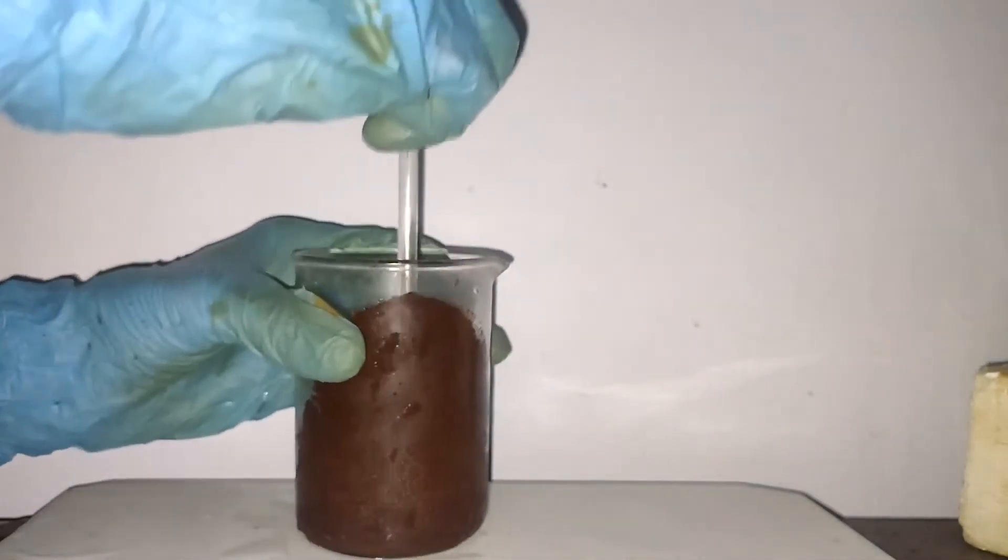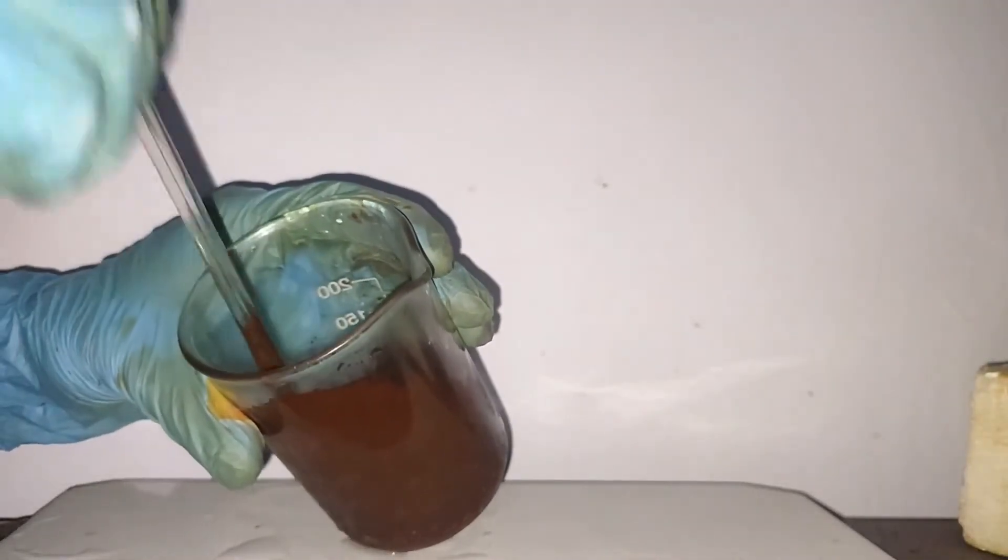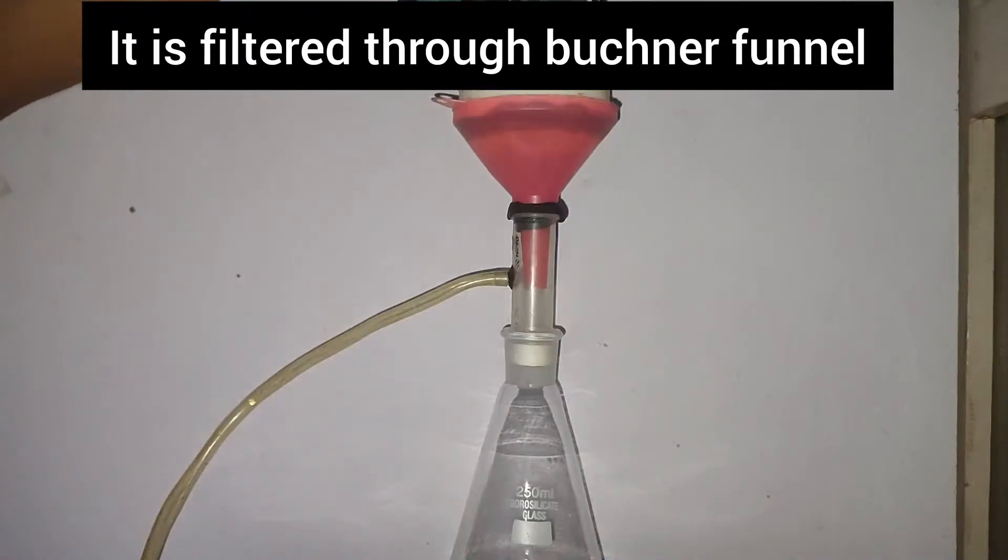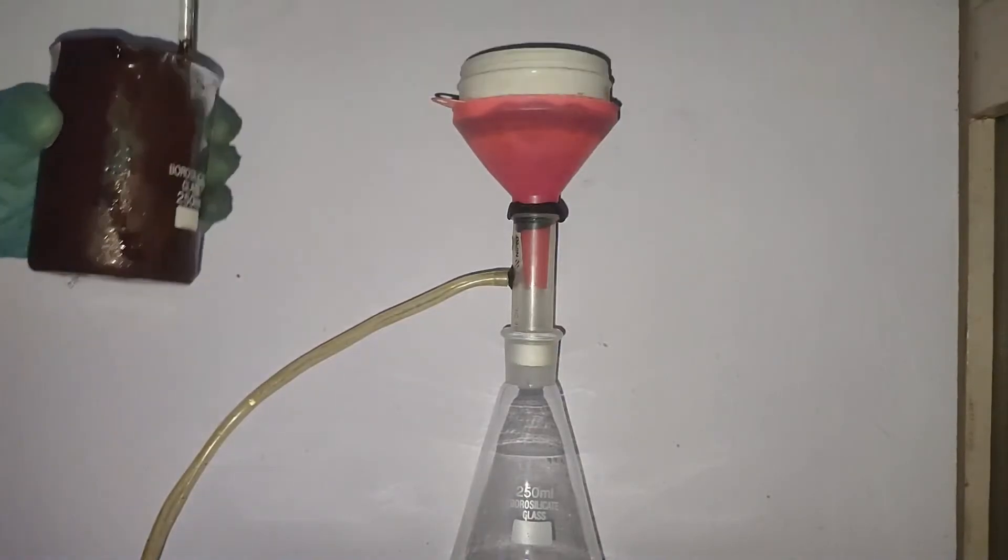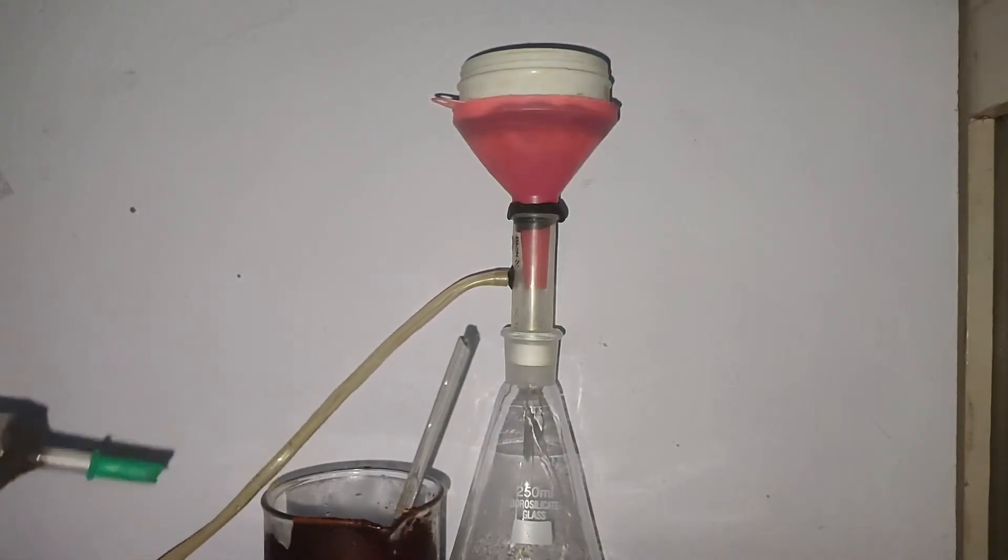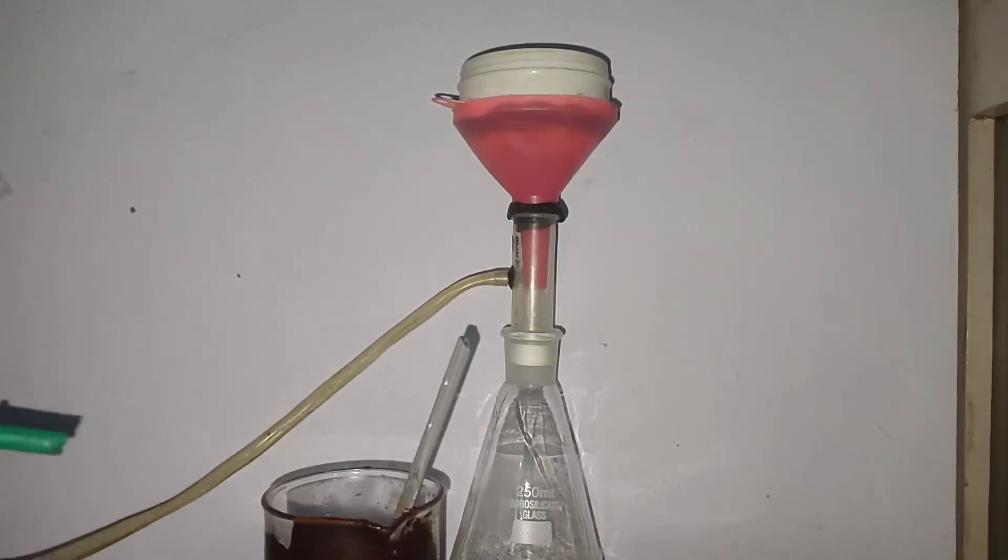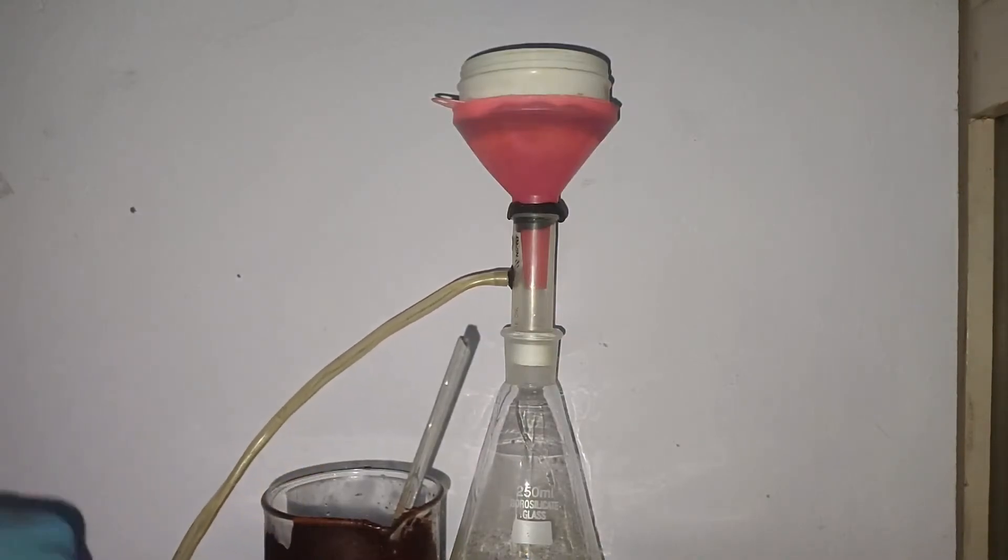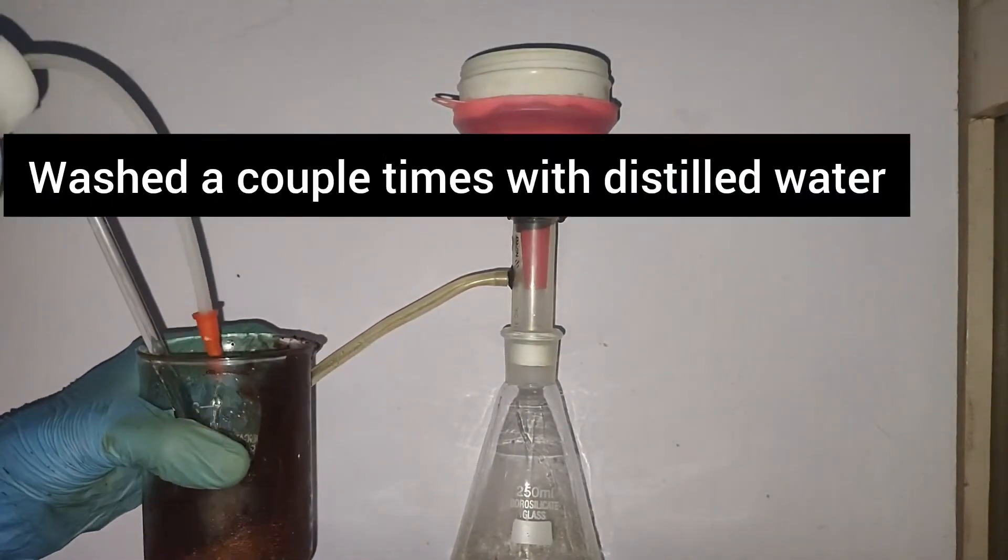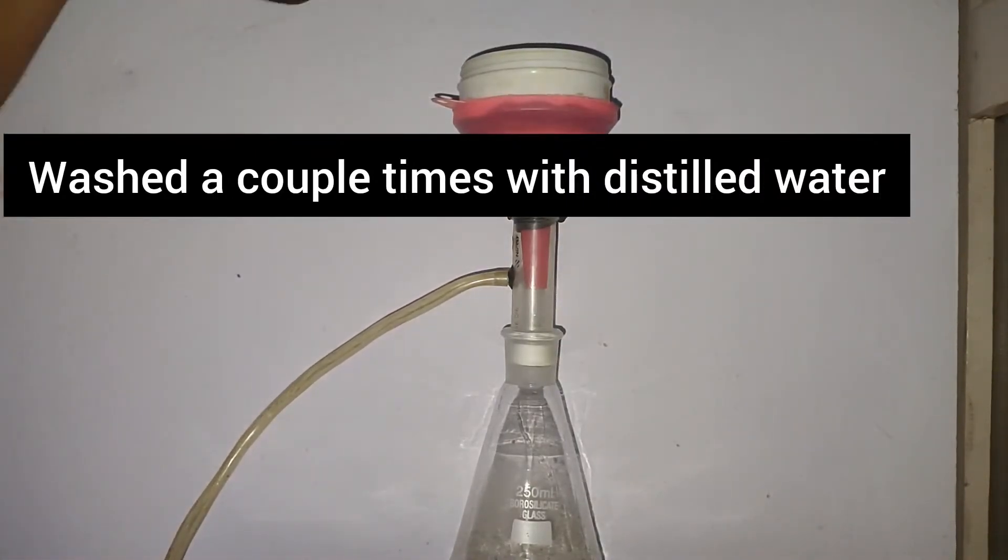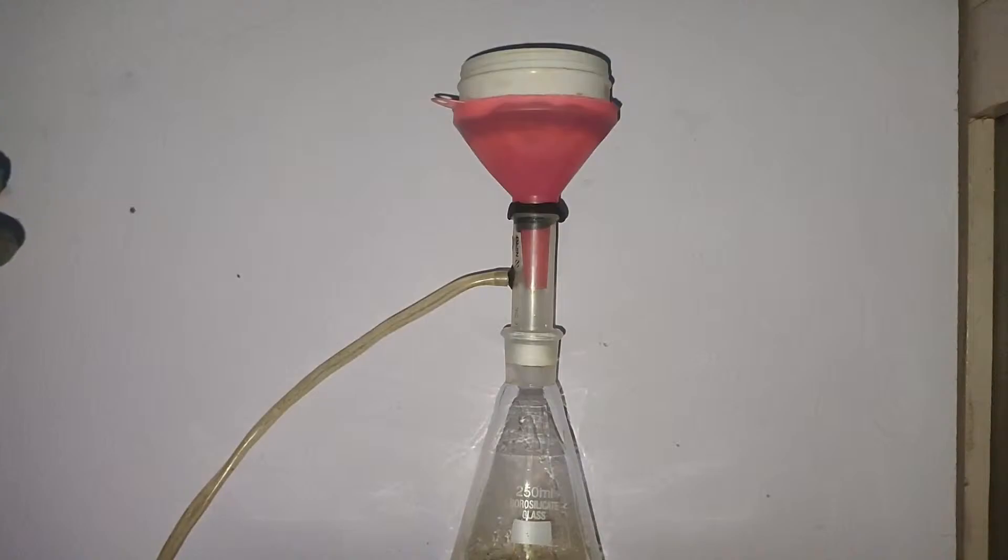This is the dye Magneson 2, which is brown in color. Now this is vacuum filtered through a Buchner funnel. This is my DIY vacuum pump and Buchner funnel. If you want to see, you can click on that eye button which will direct you to the video.